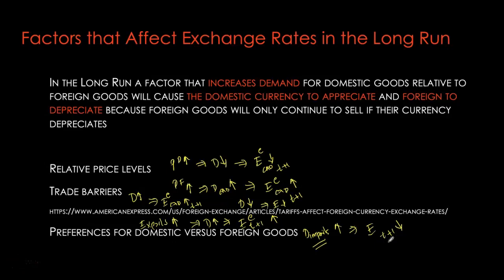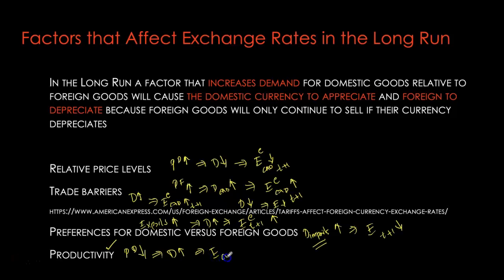Lastly, we have changes in productivity. Higher productivity allows us to produce more goods at lower prices. If our domestic economy experiences enhancements in productivity, it pushes the domestic price level down, and with lower prices we see an increase in demand. With higher demand, the Canadian dollar is expected to appreciate — we can get more euros with the same Canadian dollar. Alternatively, if our productivity declines, the price level goes up, demand decreases, and the exchange rate depreciates — the value of the Canadian dollar goes down relative to the foreign currency.